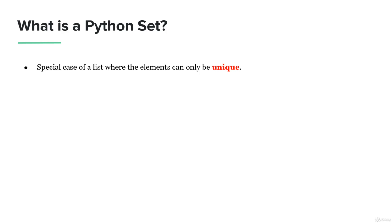What differentiates the list from the set? First, the list can contain any number of elements — these elements can be repeated or not, we don't really care. But for the set, the elements need to be unique. You need to understand that the set is a special case of a list where the elements can only be unique.